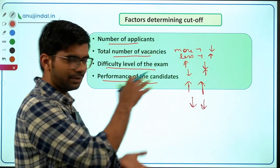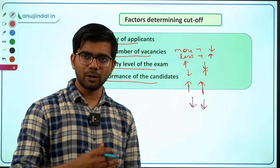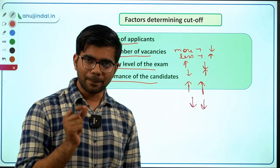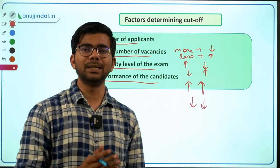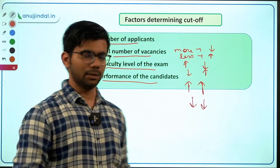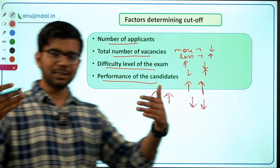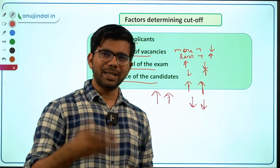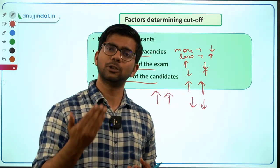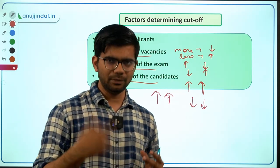This year I expect aspirants are better prepared since last year was the first time under the new syllabus. However, SEBI will likely also increase the difficulty level — Phase 1 difficulty was already higher this time. So both factors — better performance and higher difficulty — will work in opposing directions, meaning the cutoff may not change drastically. You can expect the cutoff to go up to maybe 70 to 75.